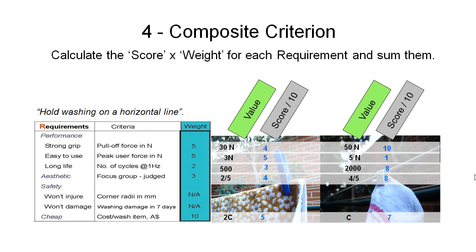The fourth and final method is the composite criterion method. This is used quite commonly — even in places like Choice Magazine — to come up with a composite score that takes into account all the different requirements and weightings to figure out which option is best overall. We take the score given to each concept, which is non-dimensional between 1 and 10 and was developed based on the values for each requirement, and multiply those scores by the weightings representing the level of importance for each requirement.